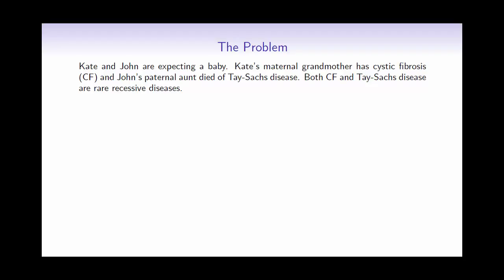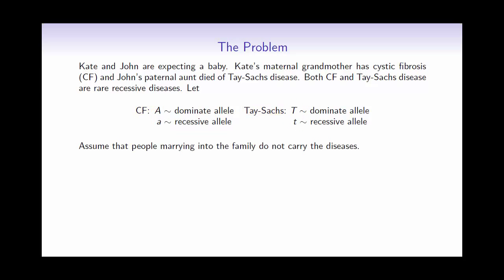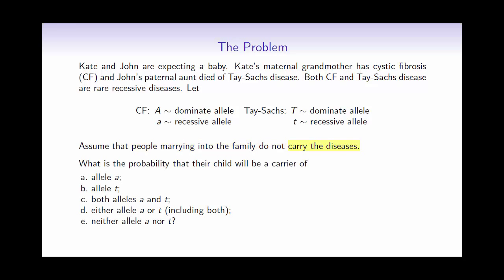In this video we're going to look at an inheritance problem. Kate and John are expecting a baby. Katie's maternal grandmother has cystic fibrosis, and John's paternal aunt died of Tay-Sachs. Both of these are rare recessive diseases. We'll use uppercase and lowercase A for cystic fibrosis, and uppercase and lowercase T for Tay-Sachs. Assuming that all people who marry into the family do not carry any of these diseases, we will calculate the following probabilities for the genotype of the child.